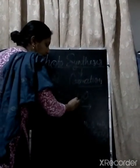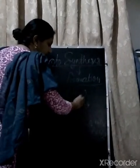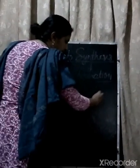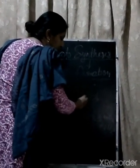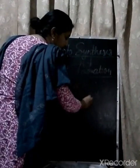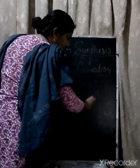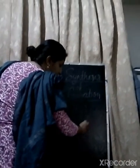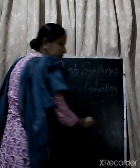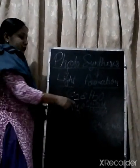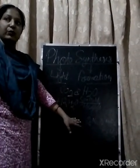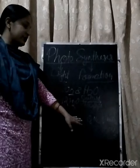Above the arrow we write sunlight, because sunlight comes from the sky. Below the arrow we write chlorophyll, because chlorophyll pigment is present in the leaves. This is the proper way to write the equation of photosynthesis.